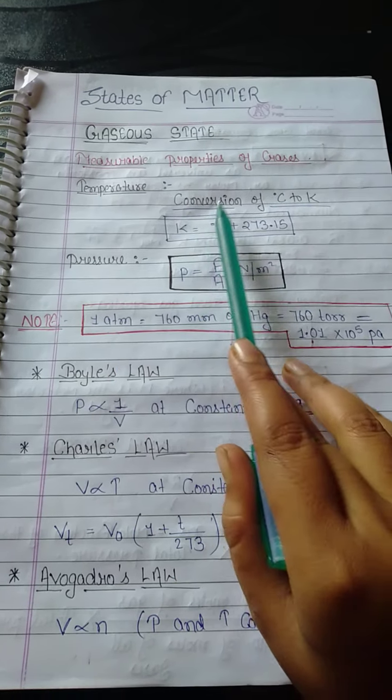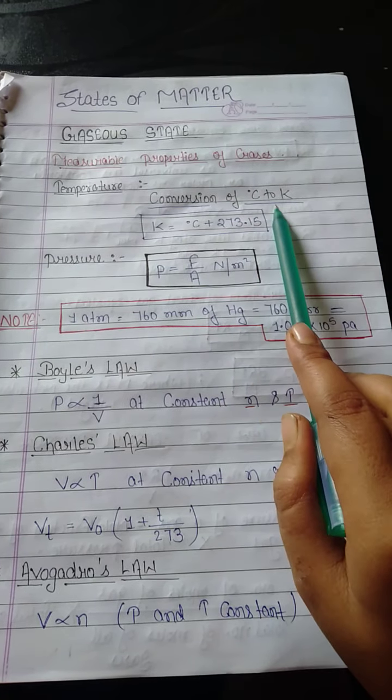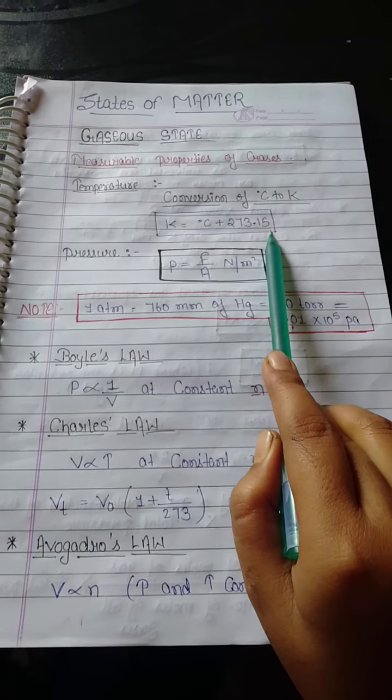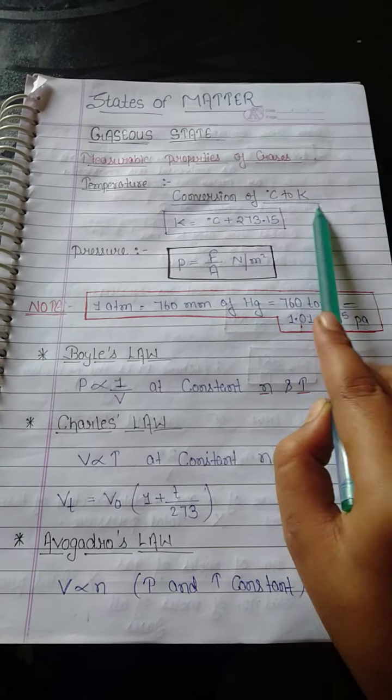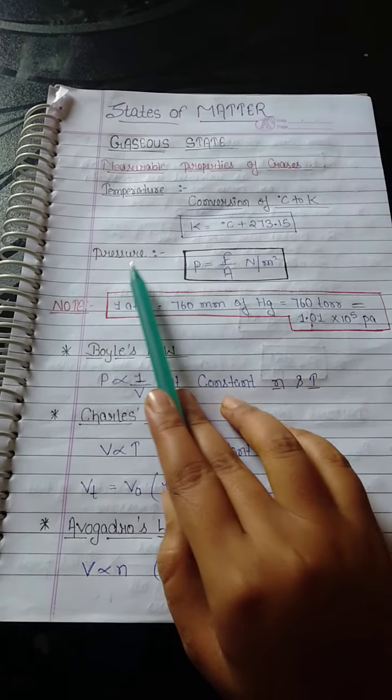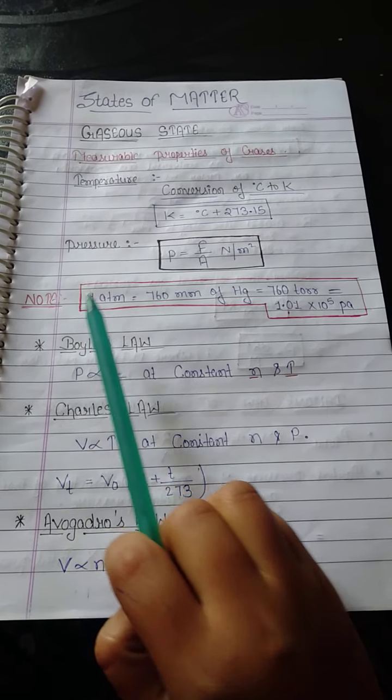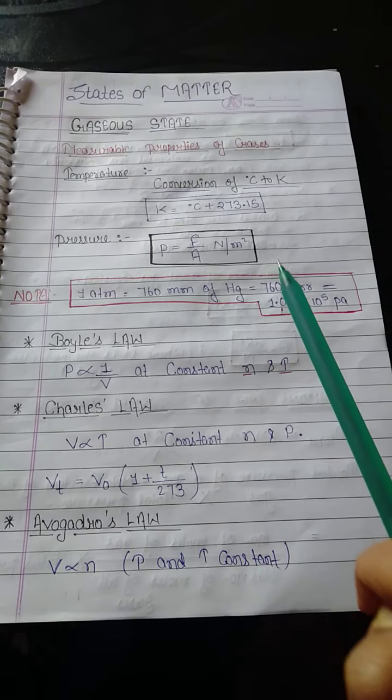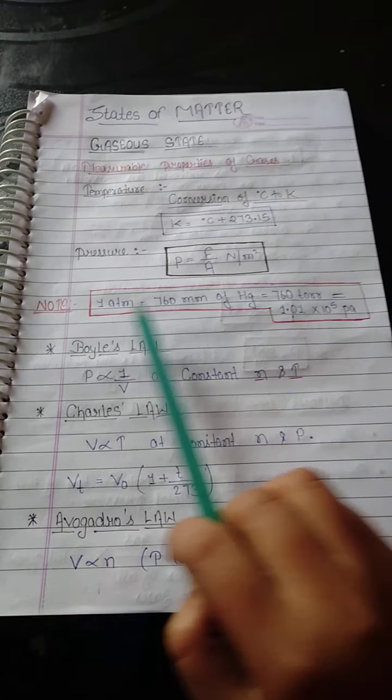This is the formula to convert degree Celsius into Kelvin. And the pressure formula of pressure, this. Note it is very important for solving the numericals.